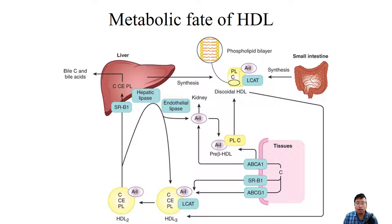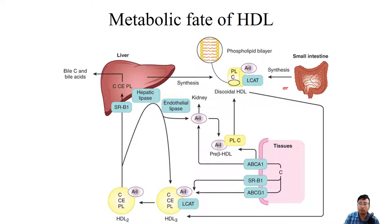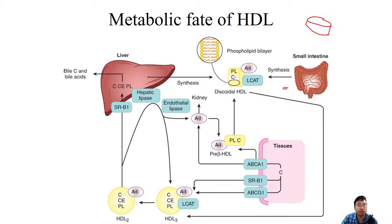HDL is produced from both liver and intestine. When newly formed — nascent — from the small intestine, its shape is discoid, like a three-dimensional disc. It contains ApoA1 and lecithin cholesterol acyltransferase, and its core contains phospholipid and cholesterol. The discoid layer is essentially a phospholipid bilayer folded onto itself.